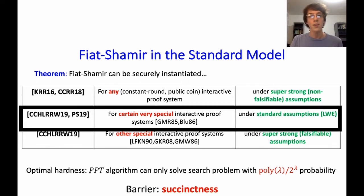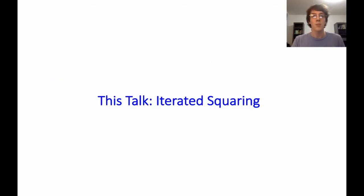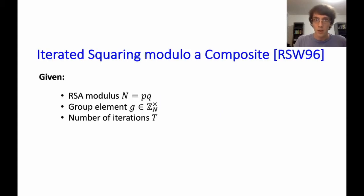In this talk we'll be focusing on the second line of results and extending it beyond what was known before, in particular to some succinct interactive proof. We'll be talking about the problem of iterated squaring. The iterated squaring problem is one in which you're given an RSA modulus n — a product of two primes whose factorization you don't know — a group element g in Z_n*, and a number of iterations t, and you want to compute g to the 2^t mod n.